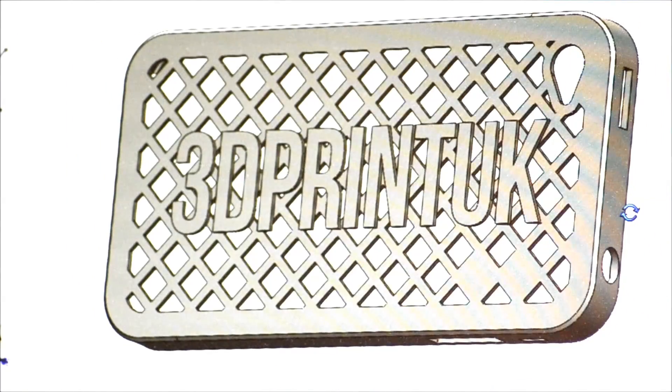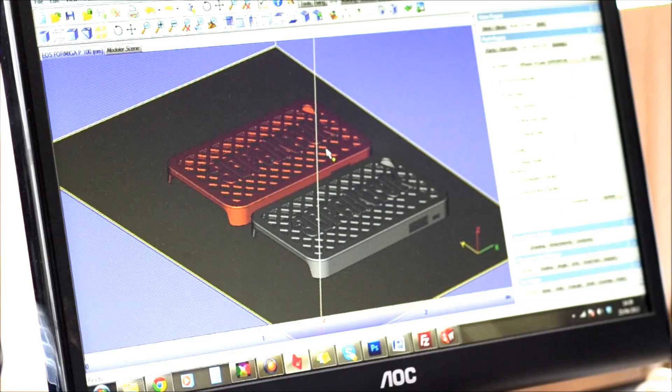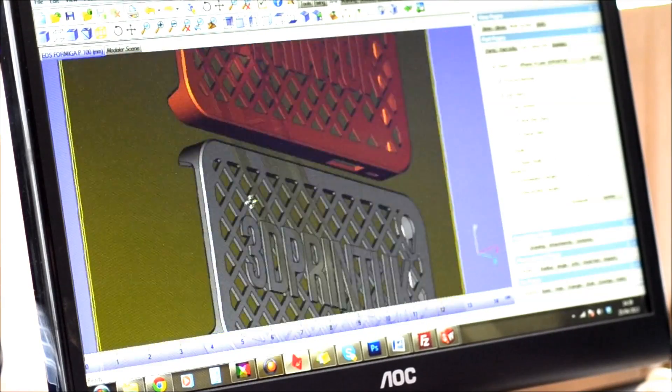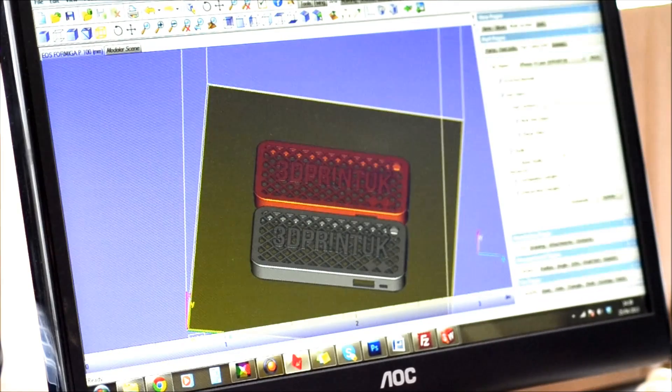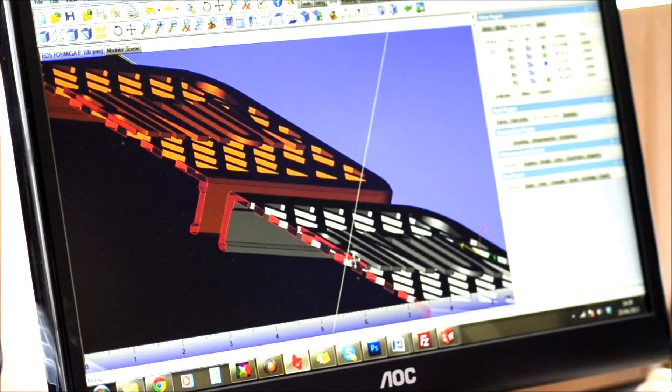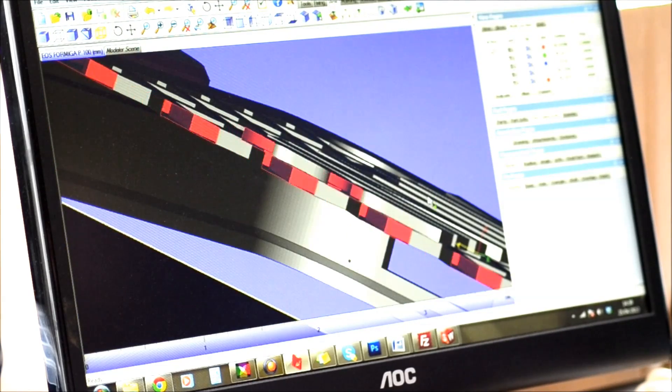You'll then need to save this from its native format into STL, and this is where we take it over to our STL correction program called Magix, which is a specific program for checking files direct for 3D print. If you're unsure of how to convert to STL, why not have a look at our guide under the tutorials tab.